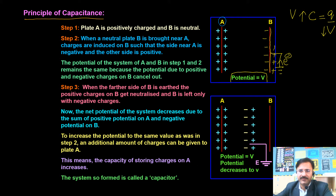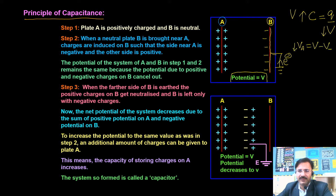As soon as the positive charge is neutralized, only negative charge remains on plate B. Due to that negative charge, the potential of plate A will decrease by a certain amount. So the potential between the plates decreases, and therefore the capacitance increases. This is the basic principle of capacitance.